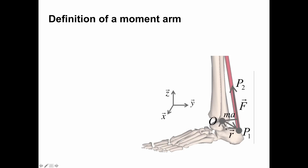The moment arm is a geometric quantity that tells you the distance between the origin and this line of action or this vector. Obviously, the closer the muscle path is to the joint center, the smaller the moment arm, and the further away from the joint center, the bigger the moment arm. Make note of the coordinate system here, where the X coordinate is pointing out of the page. For ankle flexion-extension, rotation would be about X, and Y and Z would be in the plane.